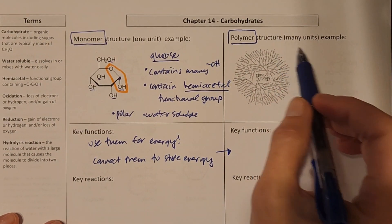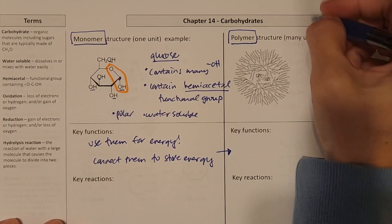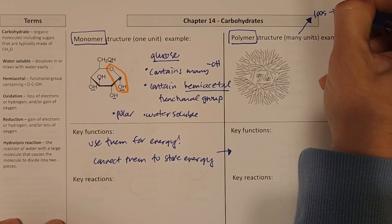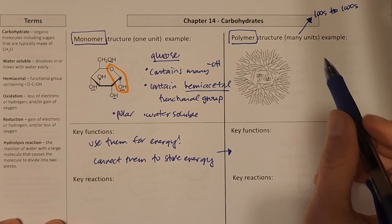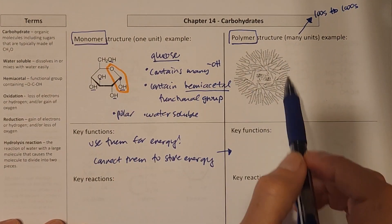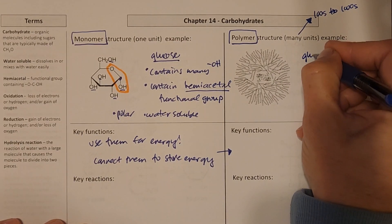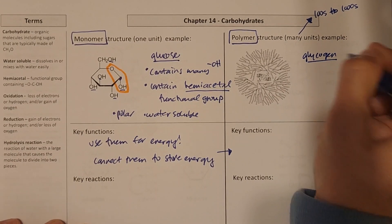So taking a look at the polymer side of things, they have many units. And what I mean by many units is hundreds to thousands of individual glucoses connected into these huge molecules. Okay, so these are gigantic. So we're looking at, for example, glycogen.